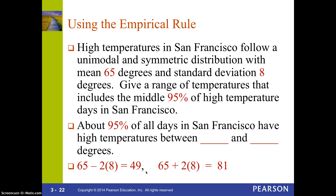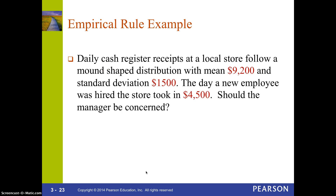It would be a nice place to live if you like consistent temperatures all year round. Here's another example. Daily cash register receipts at a local store follow a mound-shaped distribution with a mean of $9,200 and a standard deviation of $1,500. A new employee was hired, and the day they started the store took in $4,500. Should the manager be concerned?